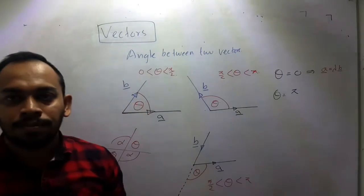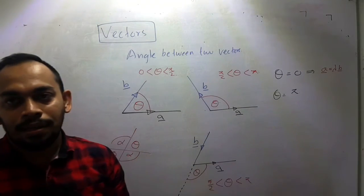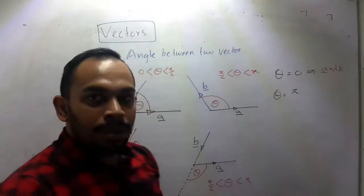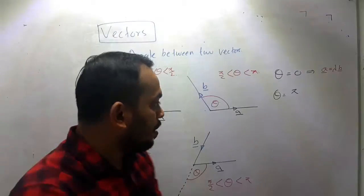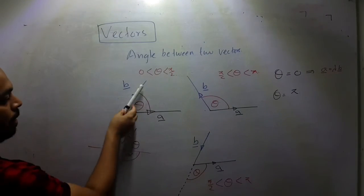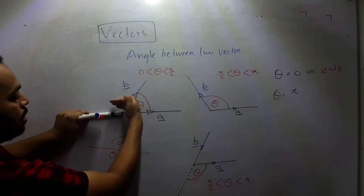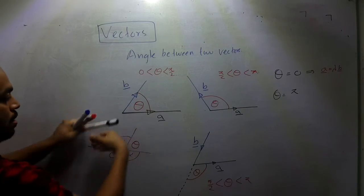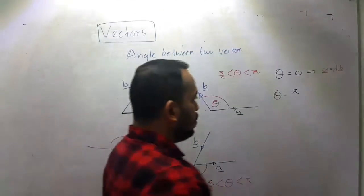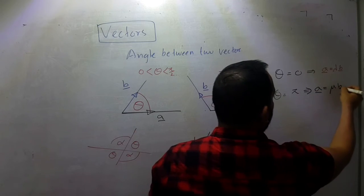Theta is equal to pi means anti-parallel. When theta equals pi, they are anti-parallel. The directions are opposite to each other.